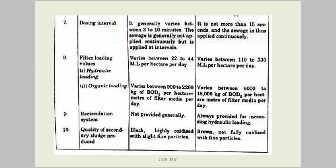The quality of secondary sludge formed in conventional trickling filter is black in color, highly oxidized, with slight fine particles. In high rate trickling filter, the sludge is brown in color with fine particles and not fully oxidized.